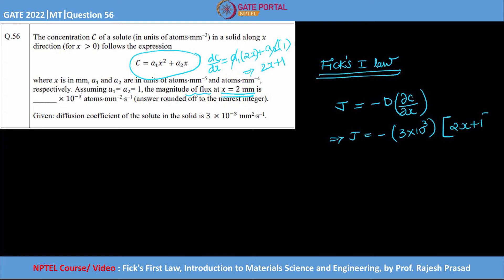2x + 1 simple. Now what you need to do, just put the value of x also because x is given as 2. So 2 × 2 + 1 is 5. So the answer would be -15 × 10⁻³.